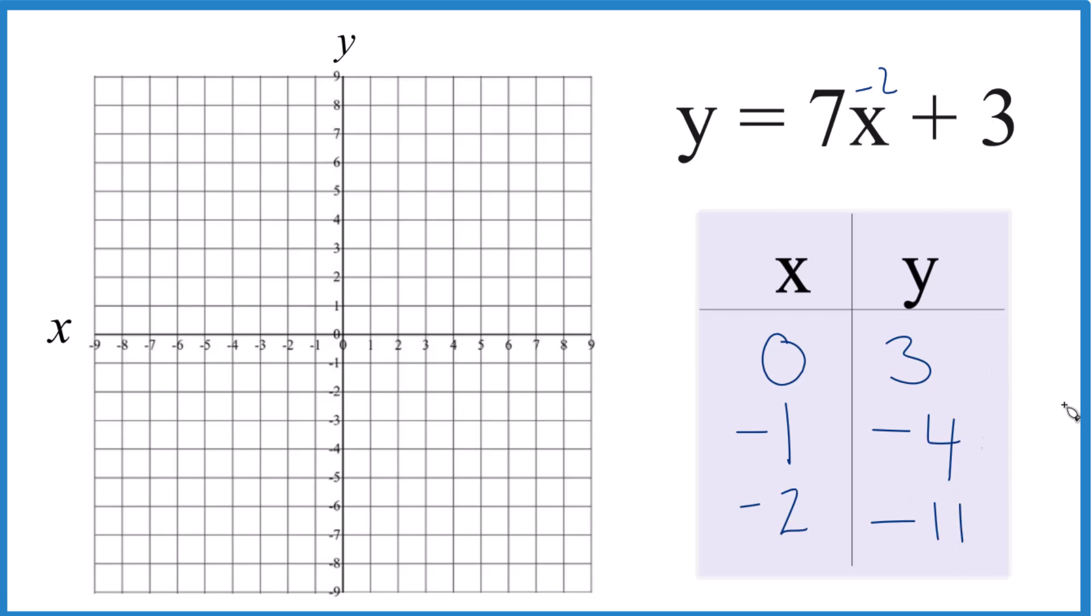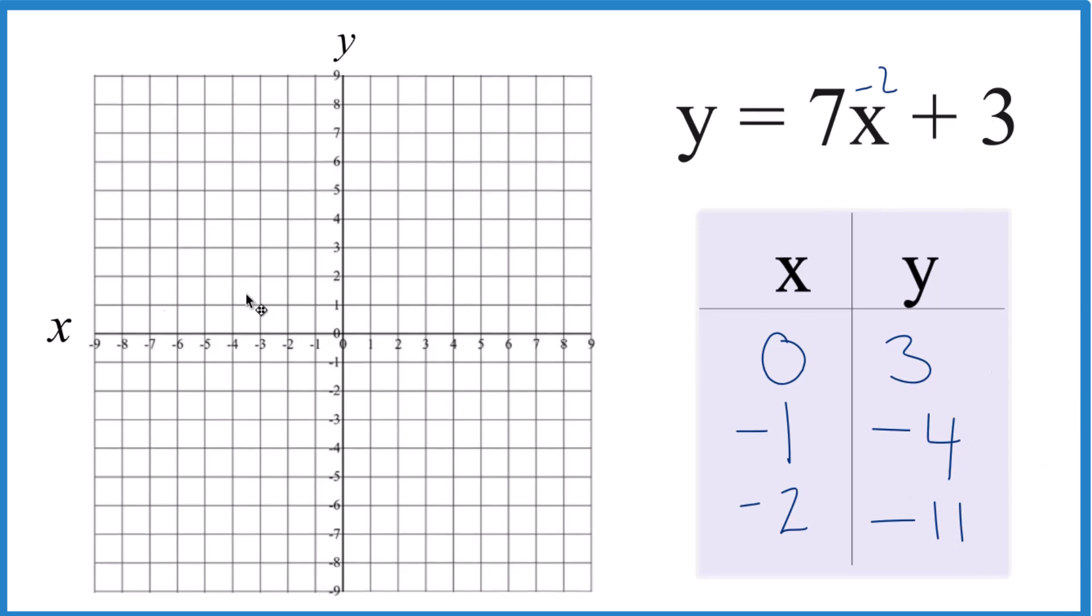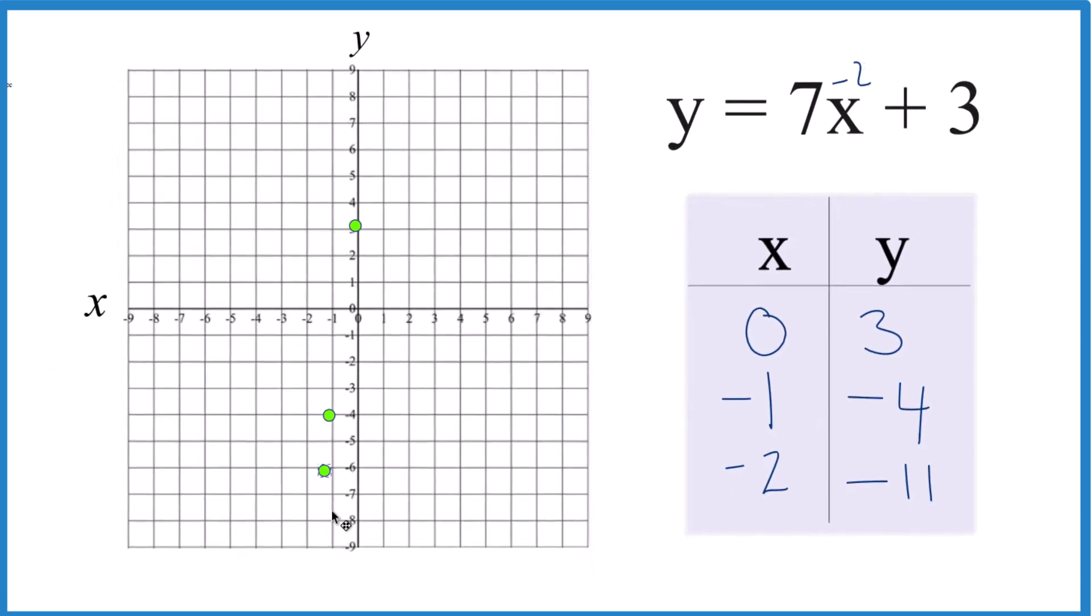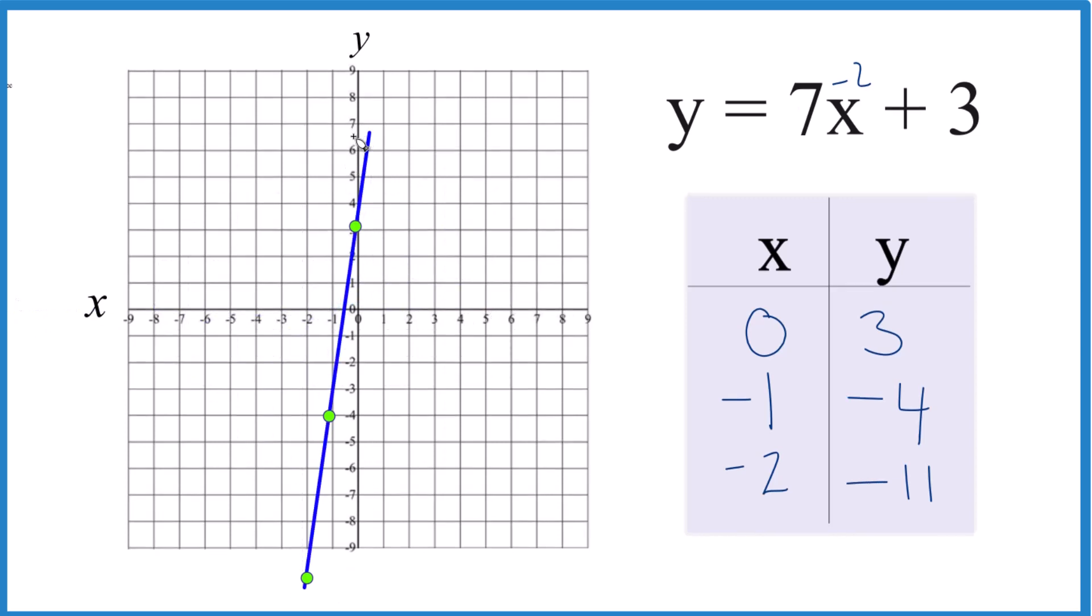Let's try it. All right, we'll graph these here now. So, x is 0, y is 3, x is negative 1, y is negative 4, and then we have x is negative 2, and y is negative 11, way down here. You can see it lines up, and we could put a line through this, put some arrows, show that this goes to infinity here.